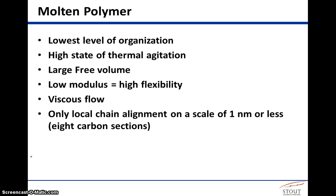The molten polymer really has the lowest level of organization. The polymer chains are in a very high state of thermal agitation. If we could visualize that surface, the polymer chains would just be in constant, rapid motion. This has associated with it a large free volume. In other words, the chains are moving so quickly that due to those vibrations along the backbones of the chains, if we were to look at two polymer chains that are adjacent to each other and do a time average,